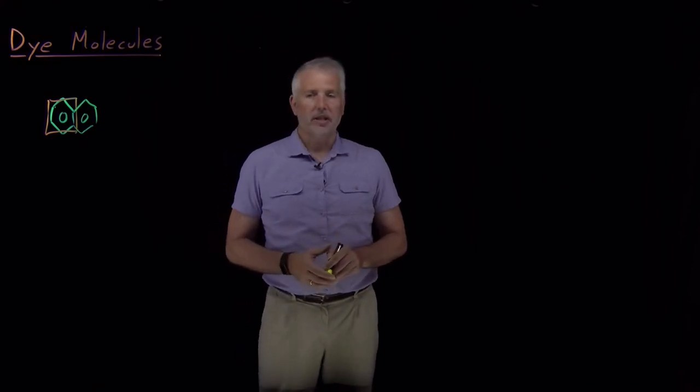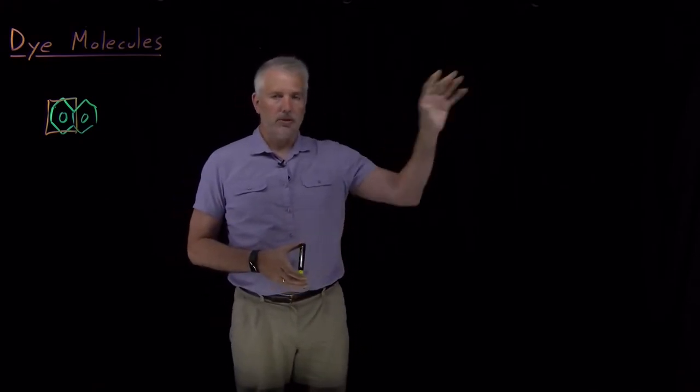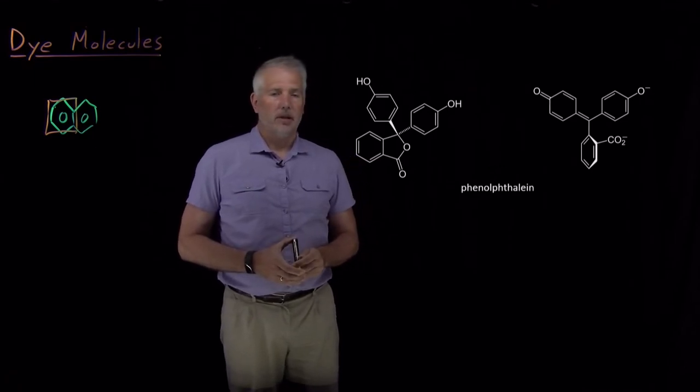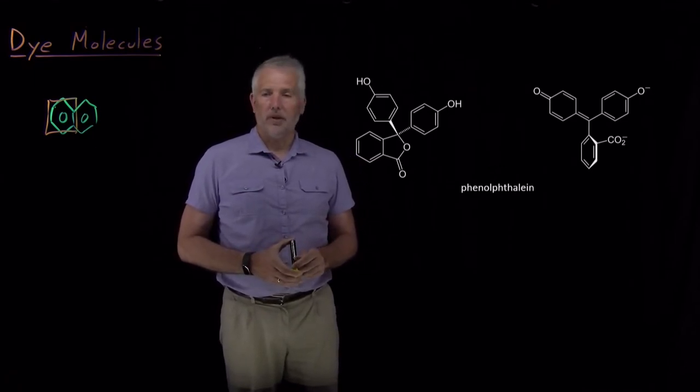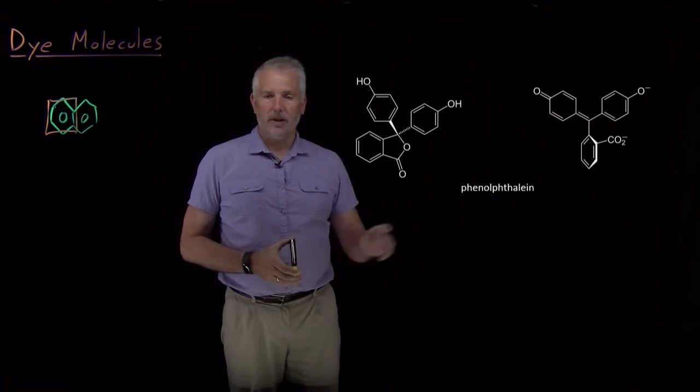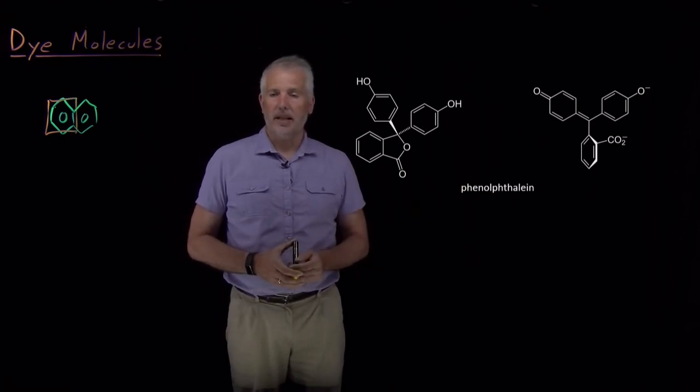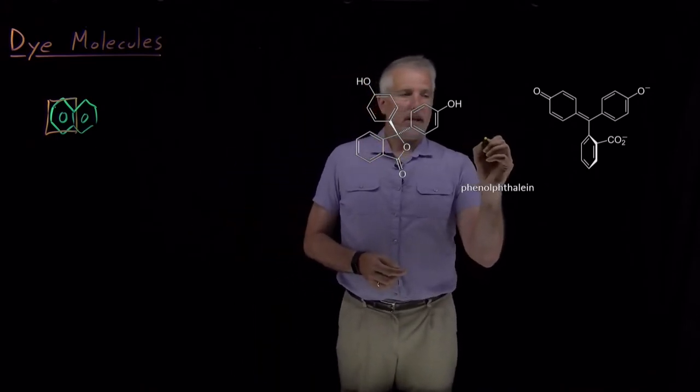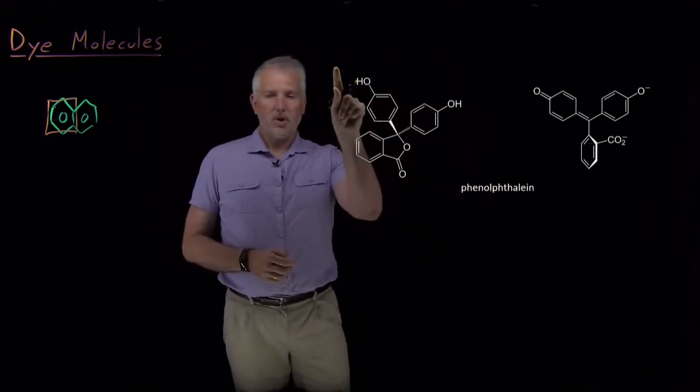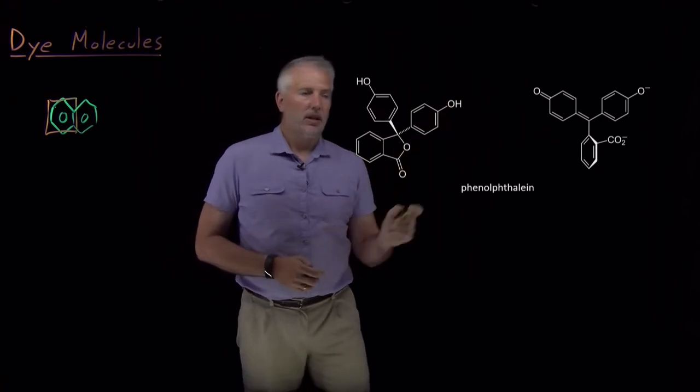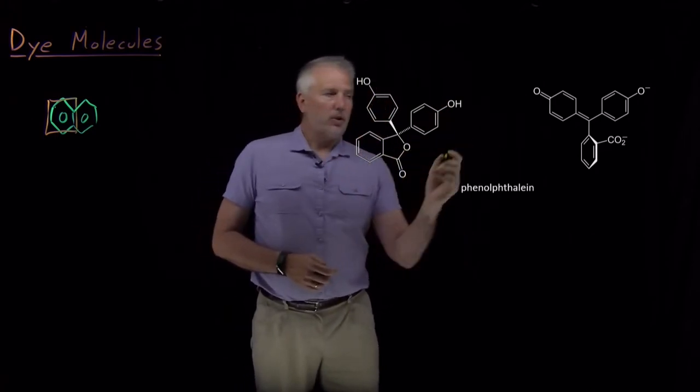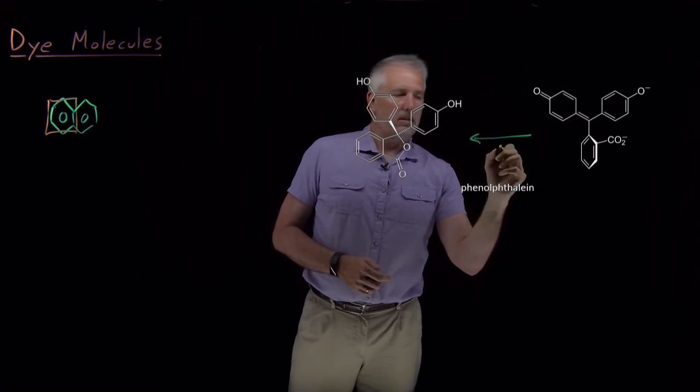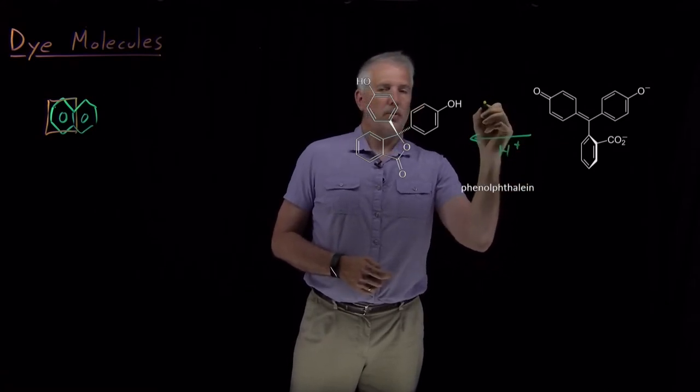As one particularly interesting example, I'll bring up a molecule you're likely familiar with from previous chemistry courses. If you've done acid-base titrations, it's very likely you've used phenolphthalein as an indicator. This molecule in its acidic form with the two protons here takes on this form.